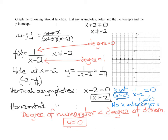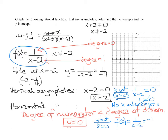The last thing is the y-intercept. You set x equal to 0 in the reduced form: f(0) = 1 over 0 minus 2, which is negative one-half. So the y-intercept is at the point 0, negative one-half. Now all I have to do is plot all that information on the graph.